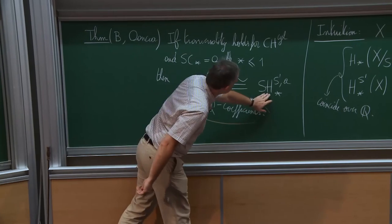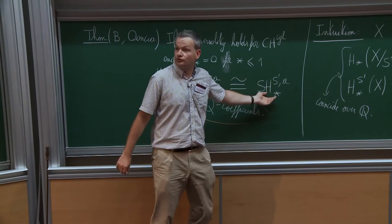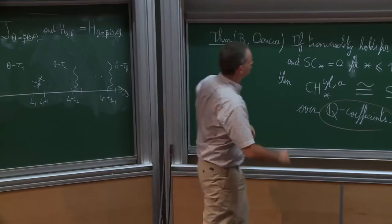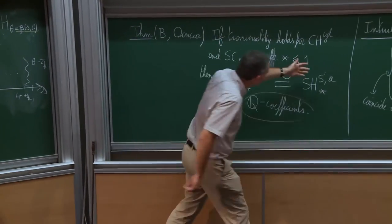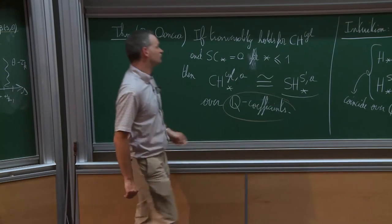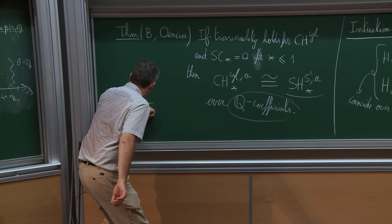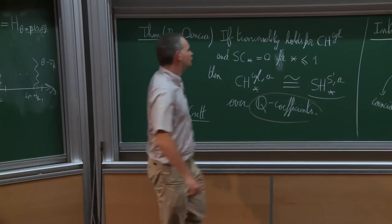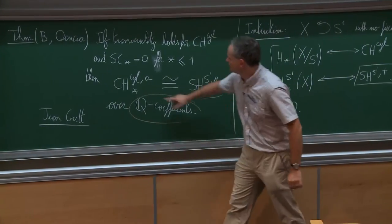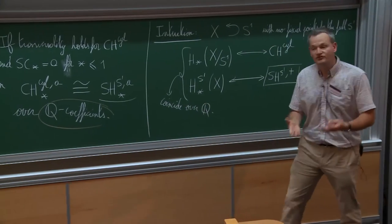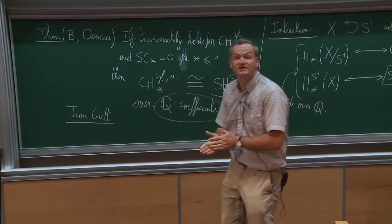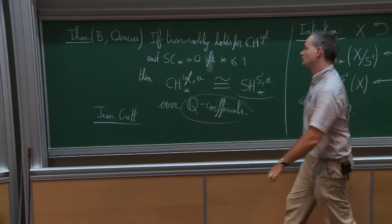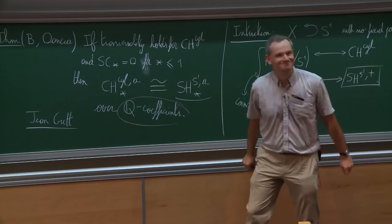Some applications of this S¹-equivariant symplectic homology have been obtained by Jean Guth, who was a joint PhD student of Alex Wansha and myself. For example, he shows that the calculation of this invariant coincides with the cylindrical contact homology for the Brieskorn spheres considered by Ustilovsky to show that there are infinitely many contact structures on (4k+1)-dimensional spheres, and also obtained some results about the multiplicity of simple closed Reeb orbits on contact manifolds using this object.